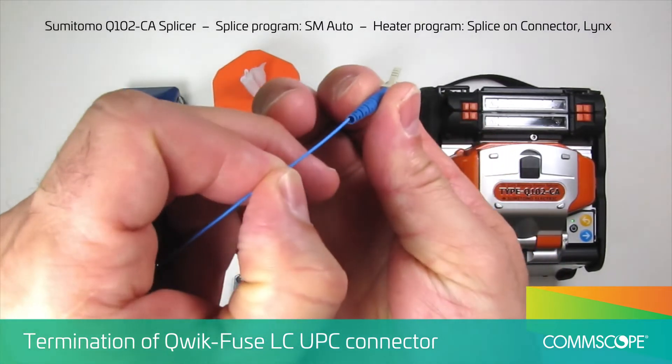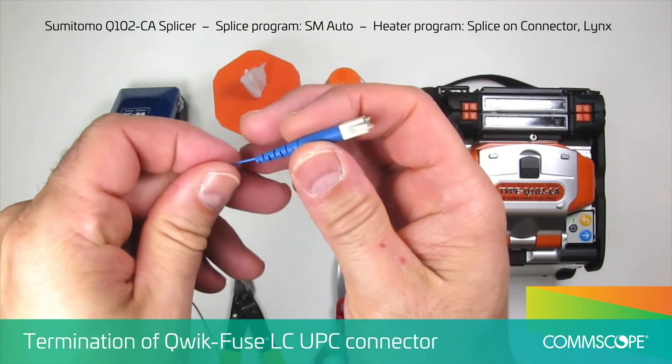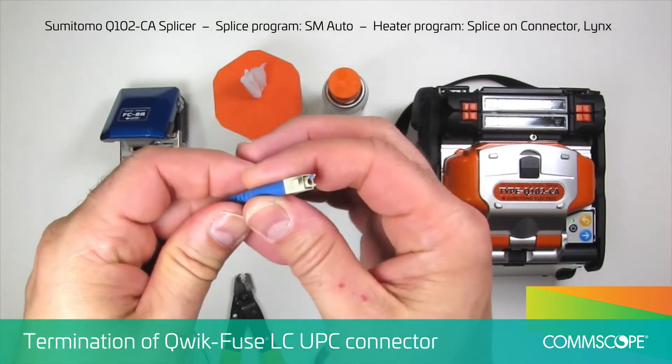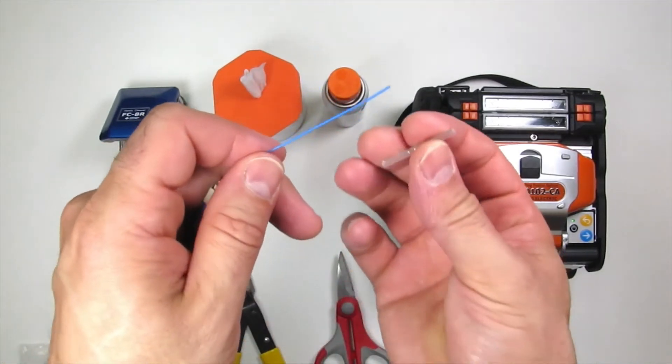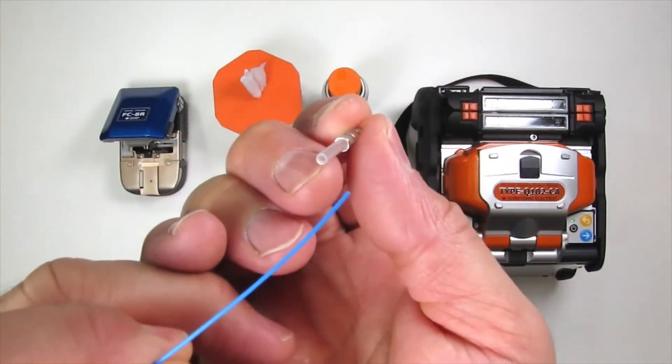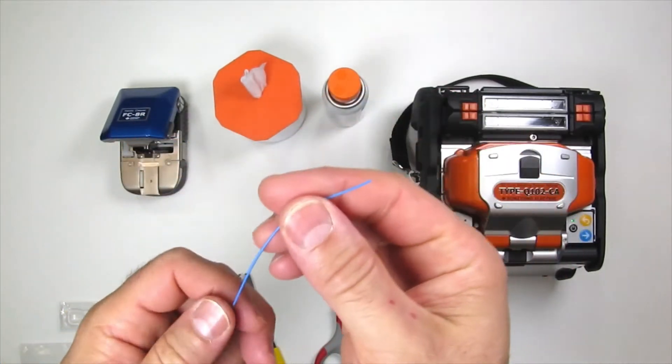Slide rear body and protective sleeve with spring onto the cable. Make sure the fiber passes through the inner tube in the protection sleeve.